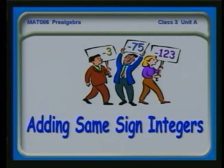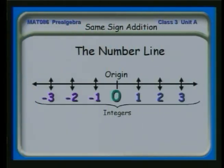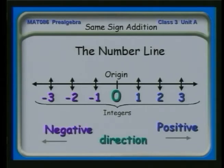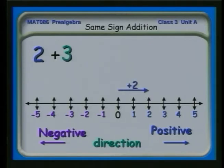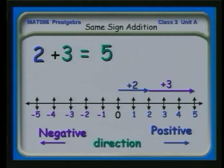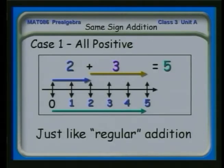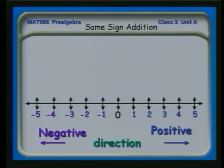Now let's talk about adding numbers with the same sign. Suppose I want to add two and three to get five. I can do this by thinking of these numbers going in a particular direction on the number line. To add two plus three, I walk two, then walk three more — I've walked a total of five units. This is case one where all the numbers are positive, and they add just like regular addition.